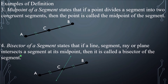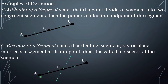The bisector of a segment is different from a midpoint. A bisector can be a line, a segment, a ray, or a plane that intersects a segment at its midpoint. A midpoint is only a point. Like a midpoint, the bisector divides the segment into two congruent parts — for example, this line divides segment AB into two congruent parts AC and CB.